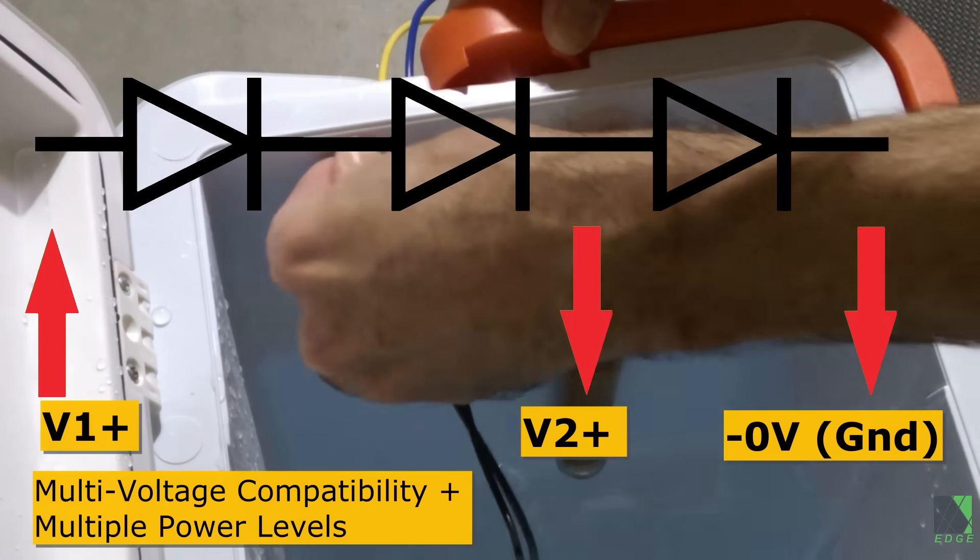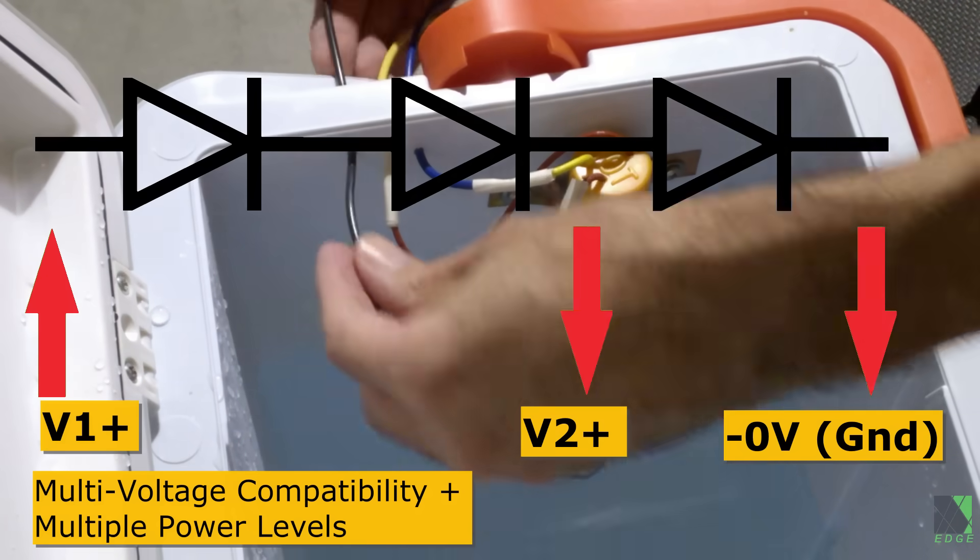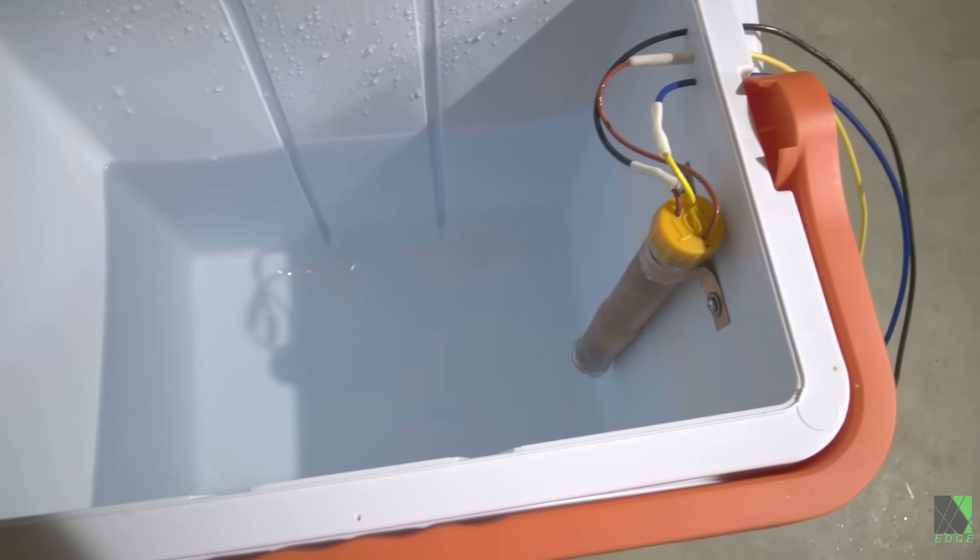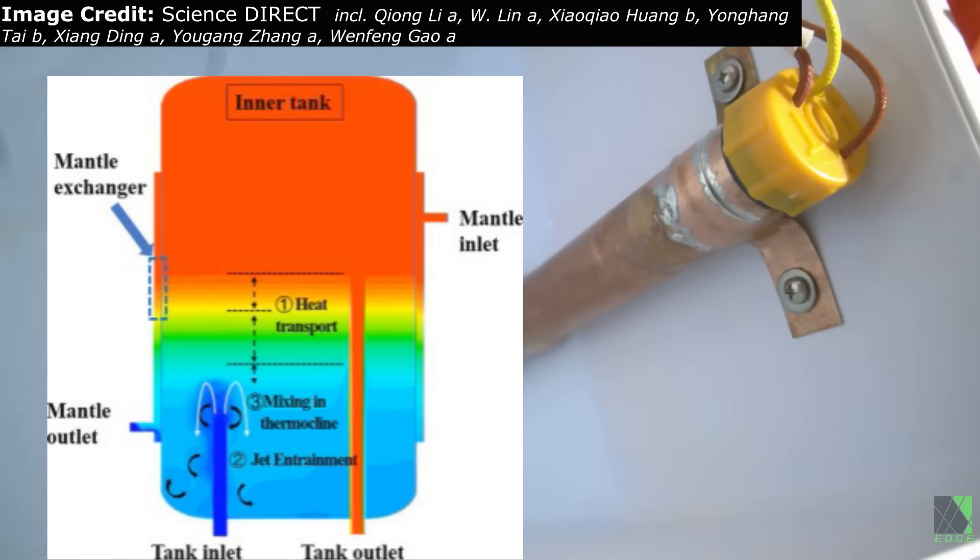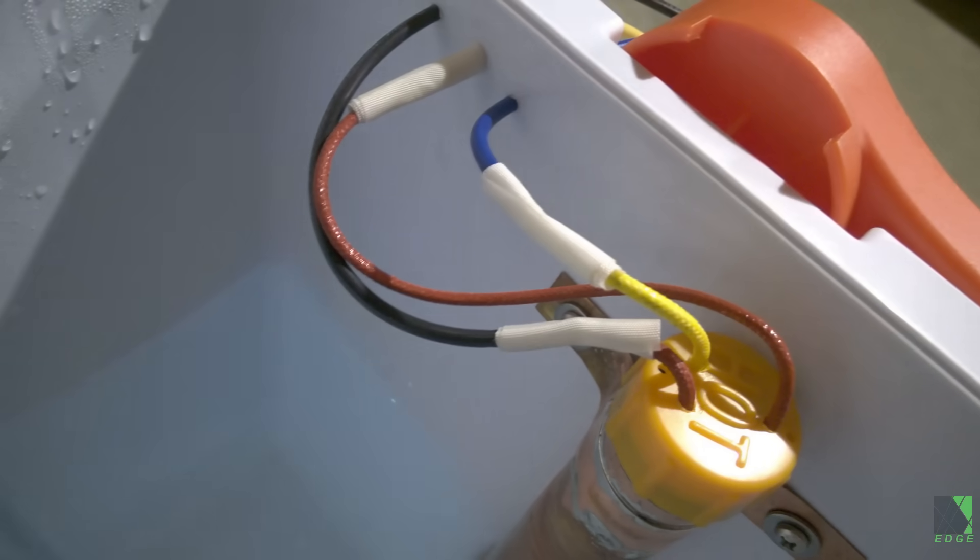Diode chains can be tapped at multiple points throughout to create different voltages and allow for flexibility of operation. One of the problems with a heating element like this is that the hot water is going to tend to want to rise to the top. This is called a thermocline and it can be a real problem if you're trying to generate hot water for, say, showers and so forth.